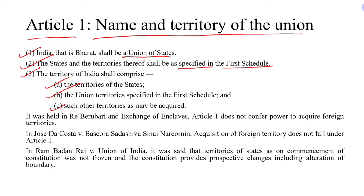Acquired territories basically means territories that India acquires after its formation or after the commencement of the Constitution. So foreign territories that are acquired either be admitted into the Union or established as new states.